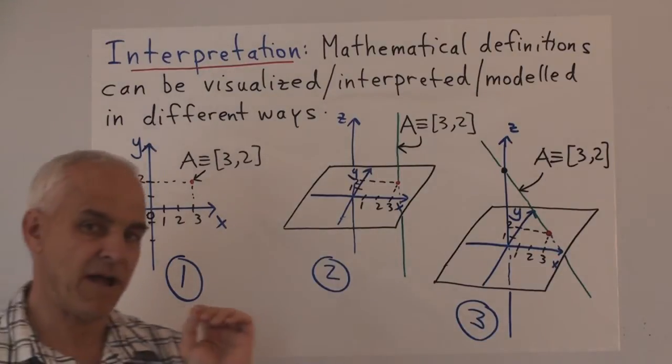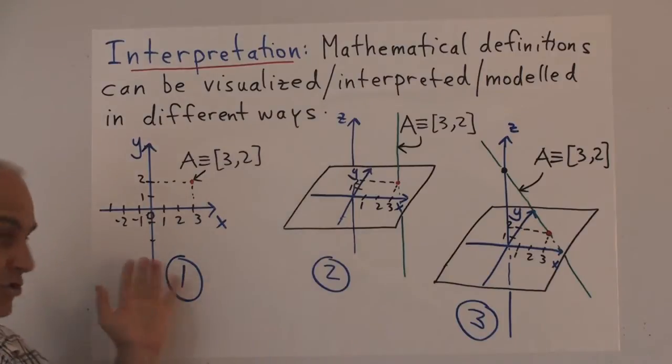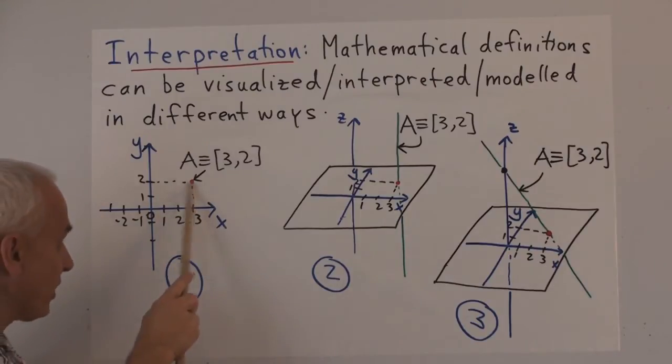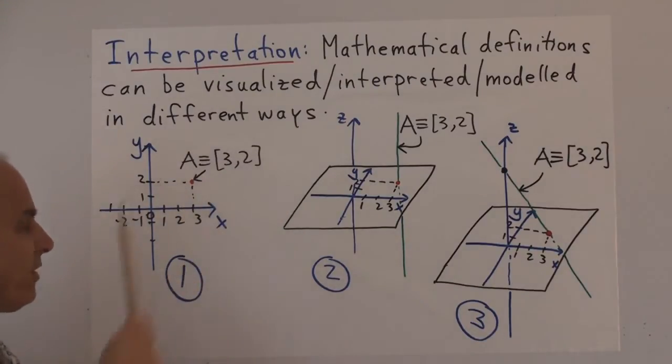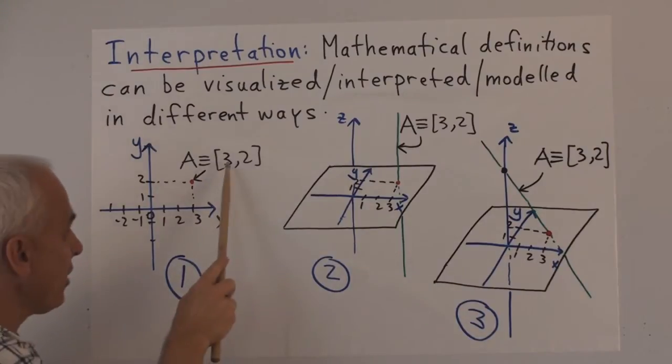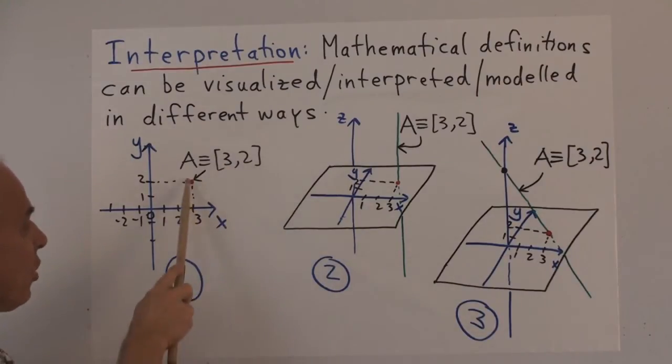When we defined a point originally, we were thinking, and I drew a picture of a plane and a dot. And I said that's the point, and we're going to describe or define what that point is. And we decided on an ordered pair to denote the X and the Y coordinates used to specify that point. So that was our definition of a point, and that was our visualization. It represents a dot in this two-dimensional plane.